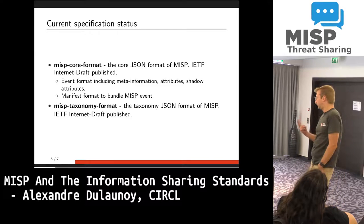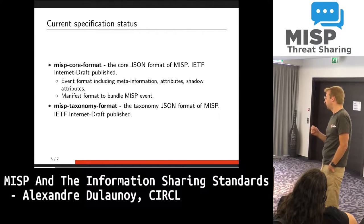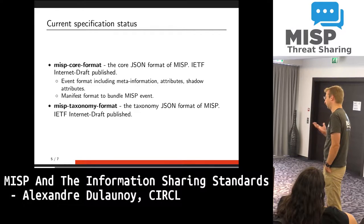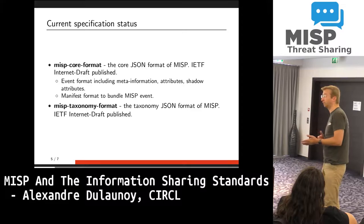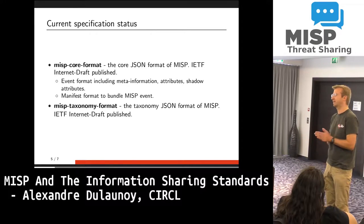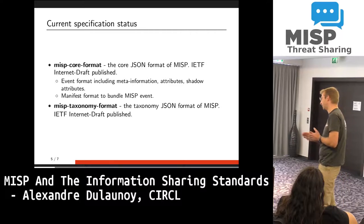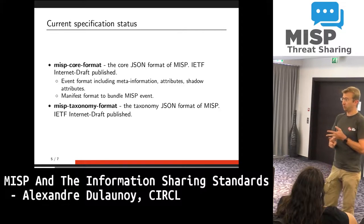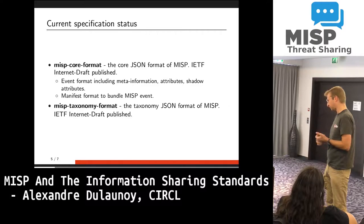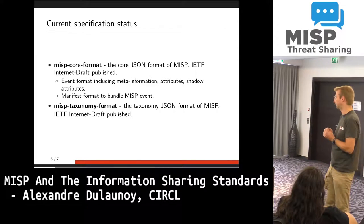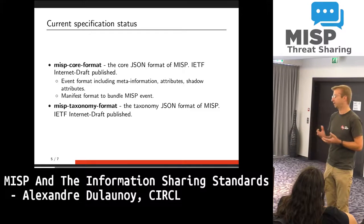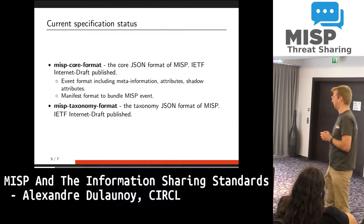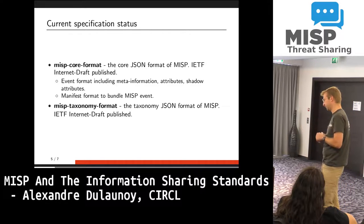There are two specifications that are currently published as Internet Drafts. One is the core JSON format of MISP. It's quite interesting because when we wrote those drafts, we started to have multiple questions like: are we sure we need that? Do we still need that? So it was a kind of good review of the format itself. The event format was described — the meta-information around it, the attributes, the shadow attribute which is how you may create proposals — and an additional manifest format, which is an easy JSON format to bundle multiple MISP events. It's around 45 pages, so it's very small, with sample files included.